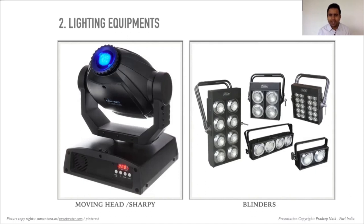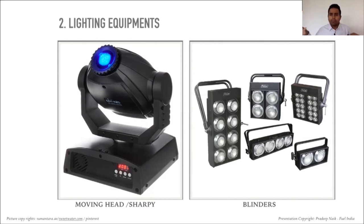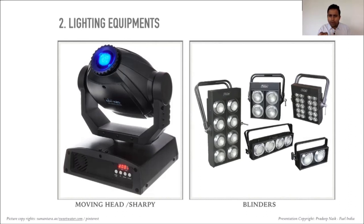The moving head or sharpie is the second most used lighting product. The fourth element is blinders, also known as audience blinders, mostly used at concerts. These are fixed to the truss facing the audience. During a performance, all lights focus on the stage and the audience side is dimmed. When the performance ends and the artist wants to interact with the audience, the blinder is turned on — it lights up the entire audience area so the artist can see and interact with them.